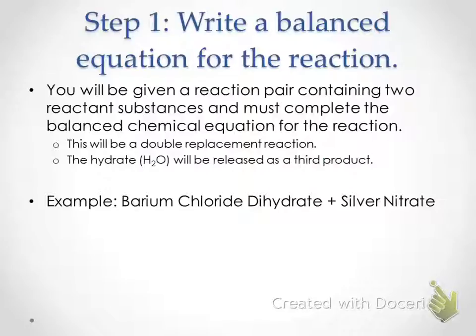So there are three steps we need to go through. Step number one is to write a balanced equation for the reaction. You are given a reaction pair containing two reactant substances. By knowing the reactants that we have and knowing that this is a double replacement reaction, hopefully remembering the information from chapter 11, you should be able to predict the products that are going to be formed.